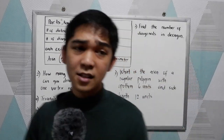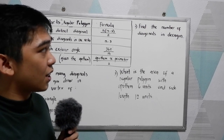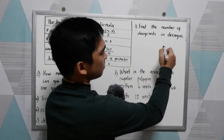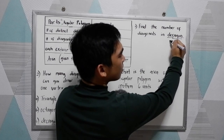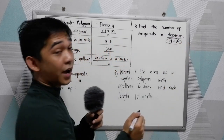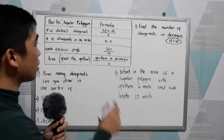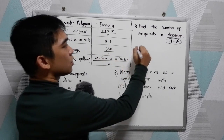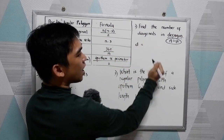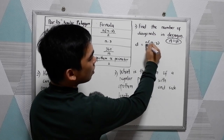Let's apply the formulas. Number one: find the number of diagonals in a decagon. In a decagon, we know that there are 10 sides. Now, to get the number of diagonals, we are going to use the formula n(n-3) all over 2.